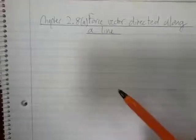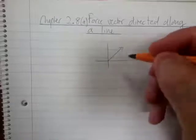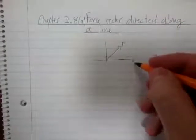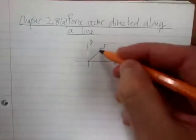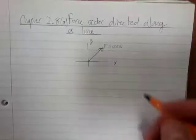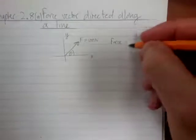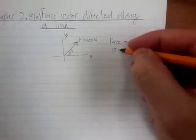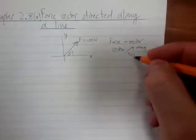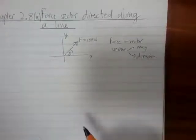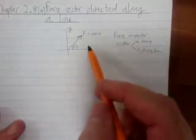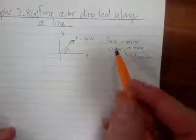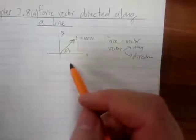What we've done before is if we have a force — say there's a force F in two-dimensional space — and we want to convert it into Cartesian Vector form, we need a magnitude, say 100 Newton, and then we need an angle. A vector has both a magnitude and a direction. Using trigonometry, we're able to convert this into FxI plus FyJ. That was Chapter 2.4.